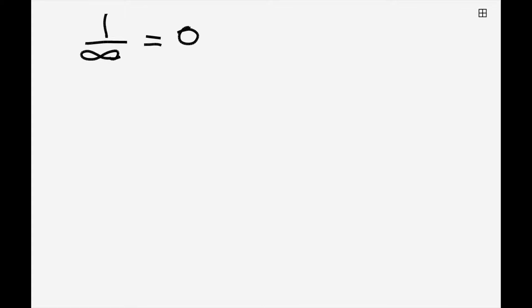One by infinity is not actually equals to zero. It is something which is very, very, very small. It is called infinitesimal. Infinitesimal is the opposite of infinity. Infinitesimal is not exactly zero, but it's very, very, very small.